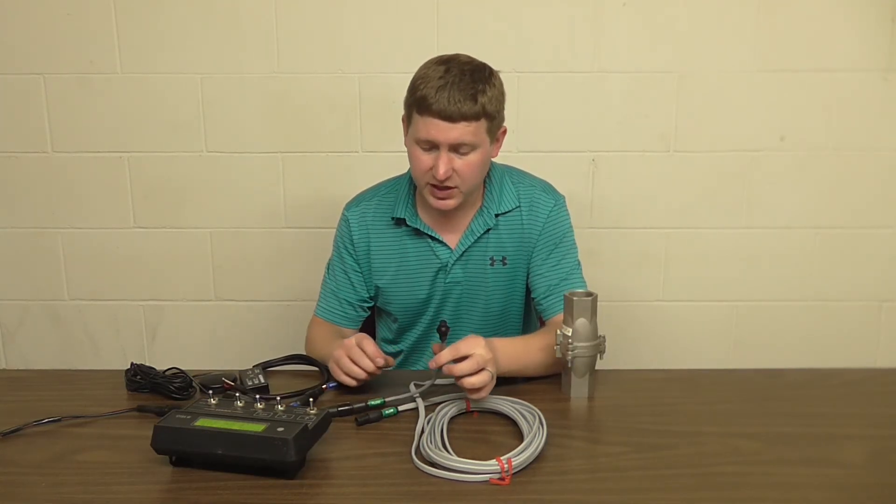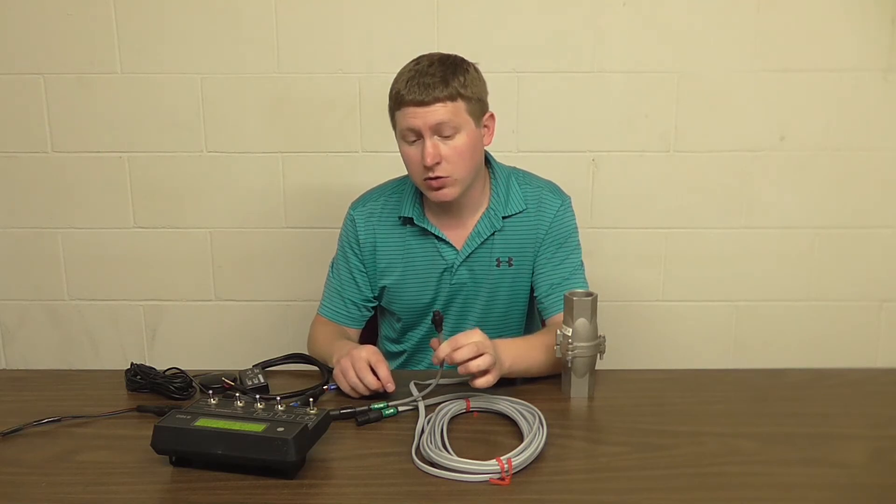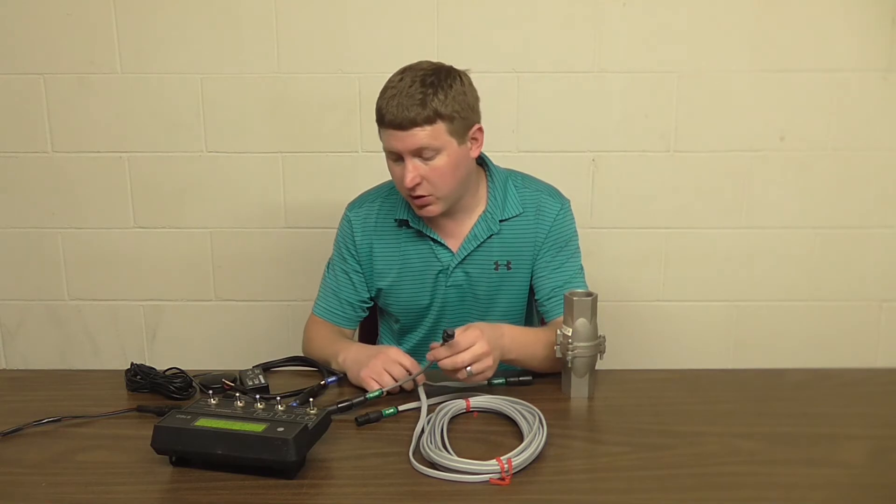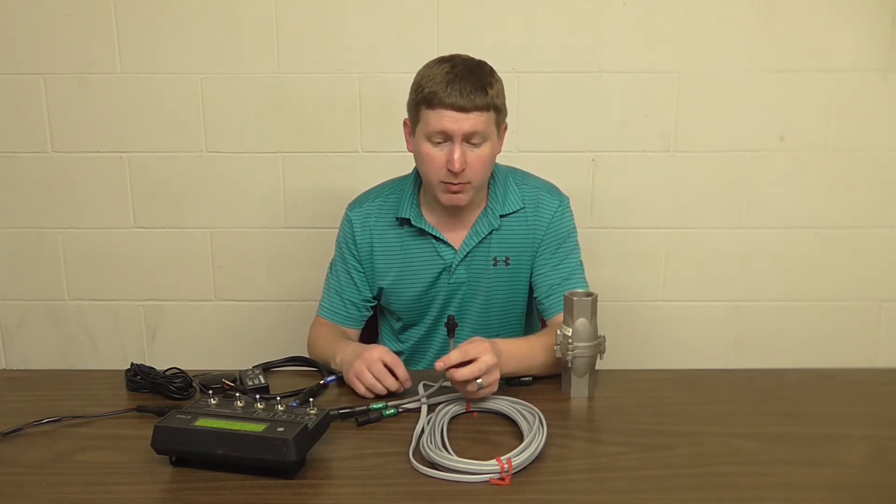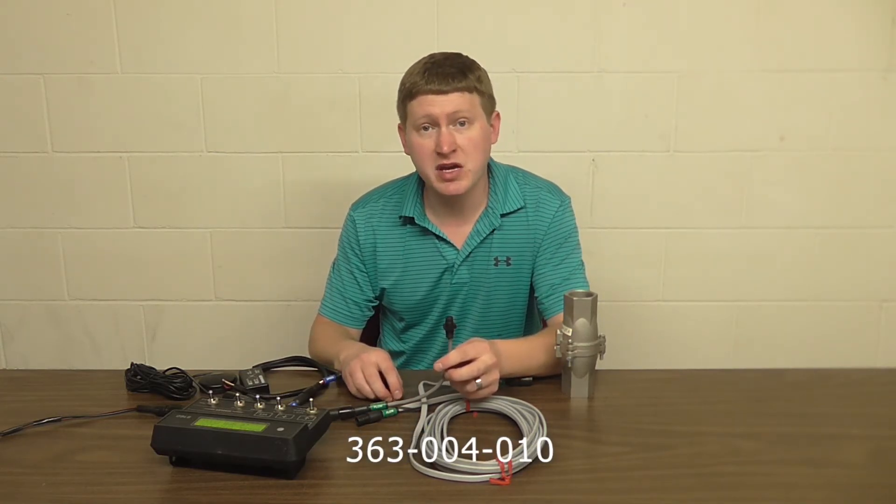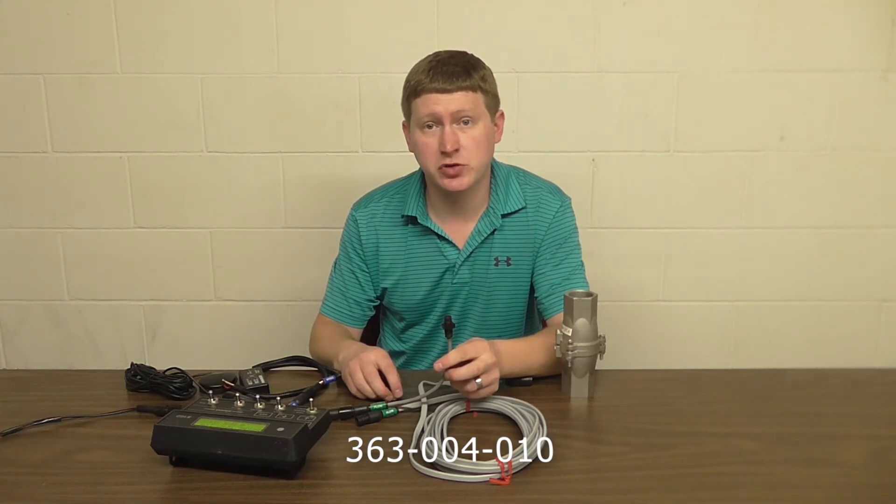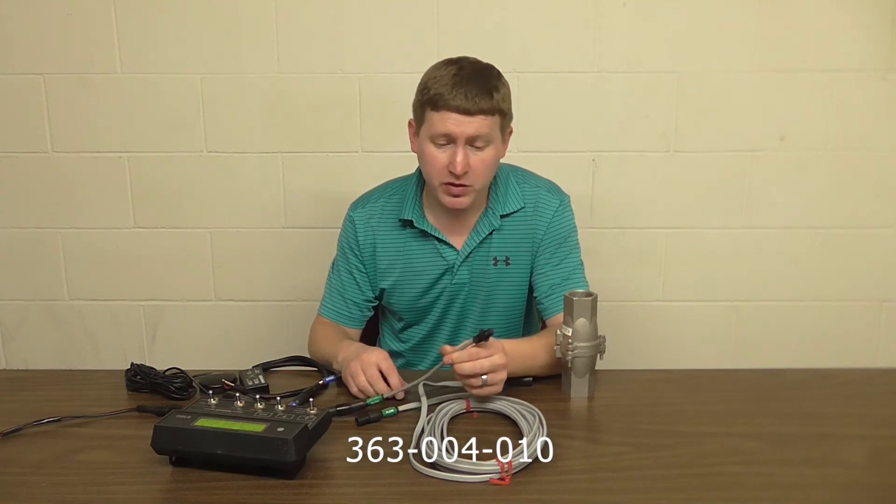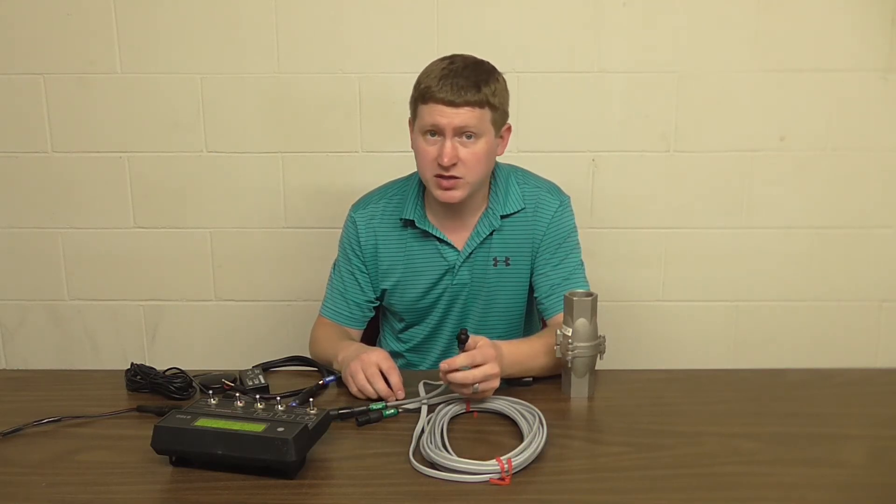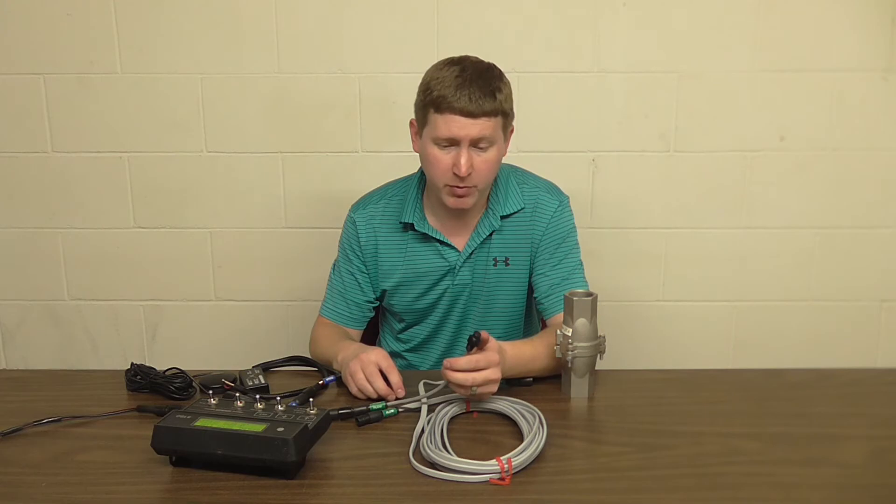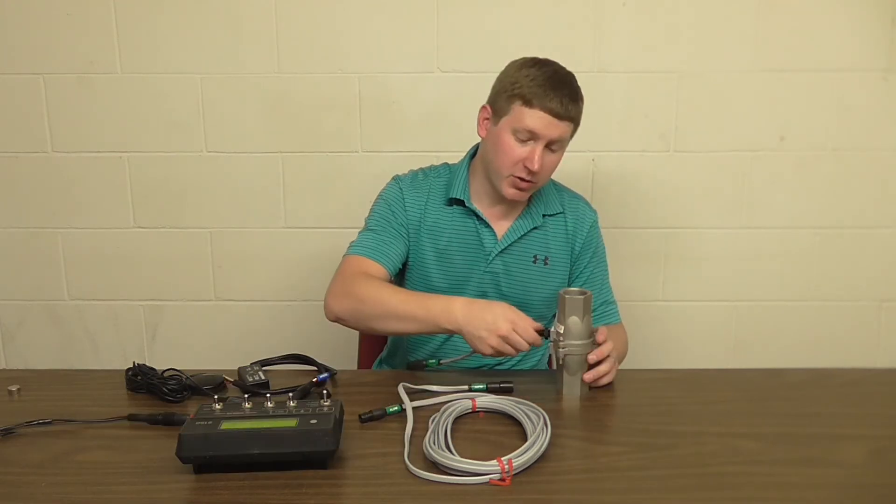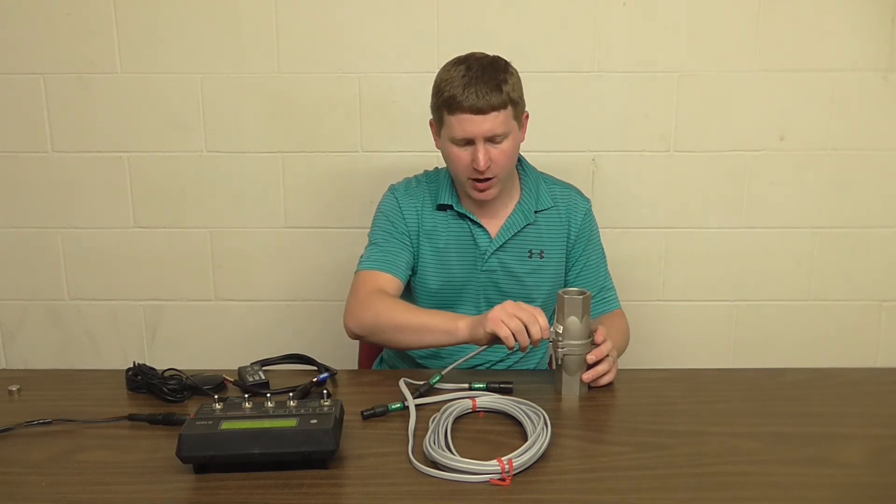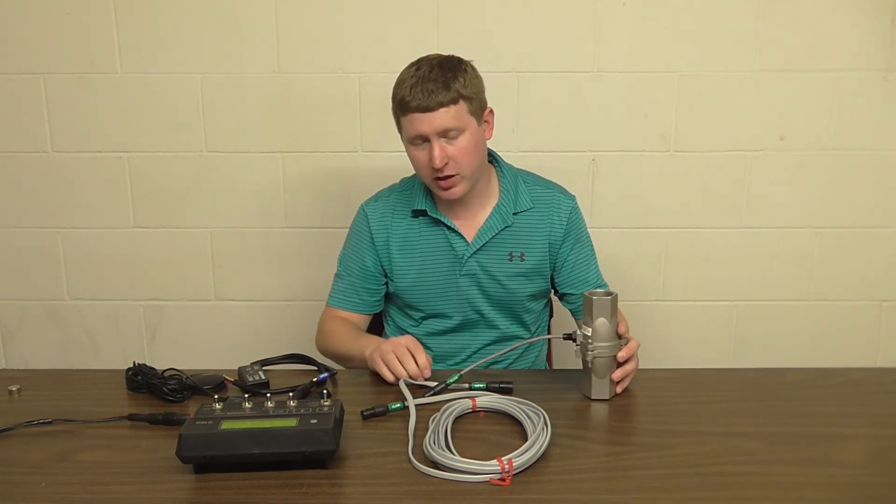Now, when performing this test, if the sensor fails, you can go and reorder a new one. Now, it's pretty easy to install, and the part number of this is going to be 363-004-010. Now, you just order one of these from your local dealership, they'll get it sent to you, and you'll be up and running as soon as possible. So, we put the sensor back into the flow meter, mount the flow meter back on the toolbar, and hook up all the connections.